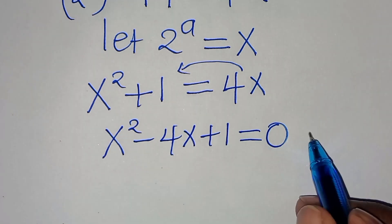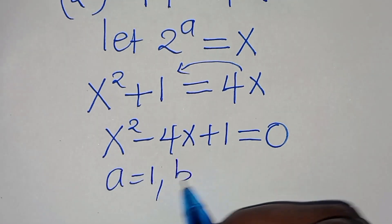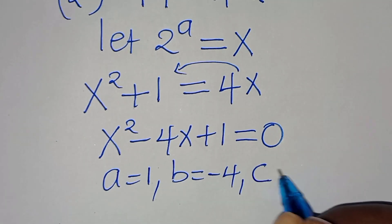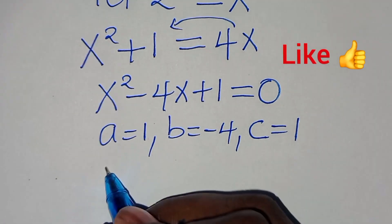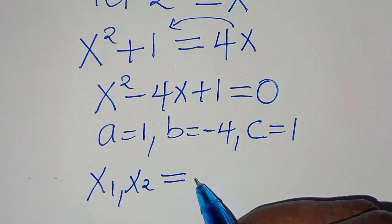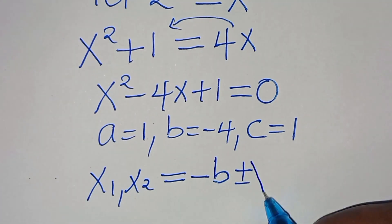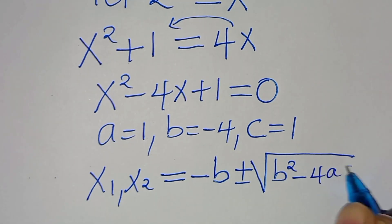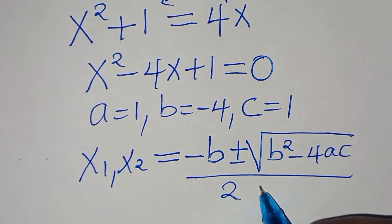This is a quadratic equation with a equal to 1, b equal to minus 4, and c equal to 1. We can solve for x1 and x2 by applying the quadratic formula, which is minus b plus or minus the square root of b squared minus 4ac, all divided by 2 times a.